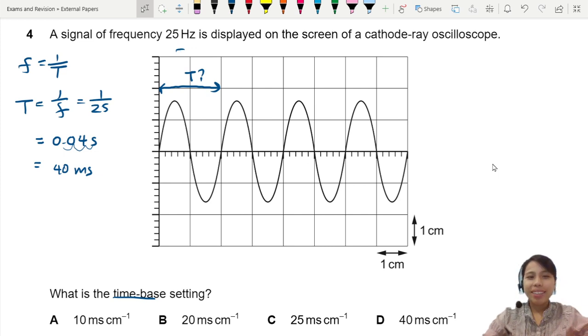Okay, so this is where it comes into play. This T from here to here is 40 milliseconds. How many cm did this cover? Two cm, because two boxes. One, two.